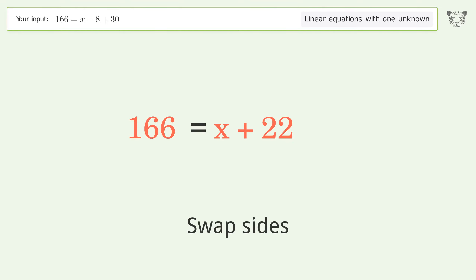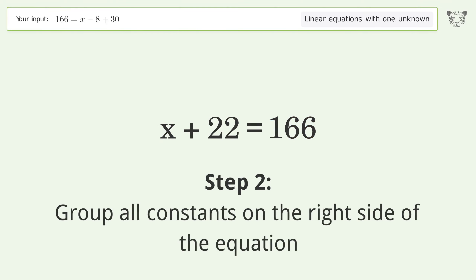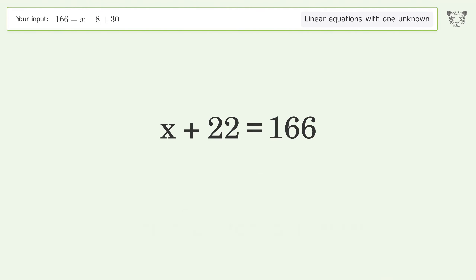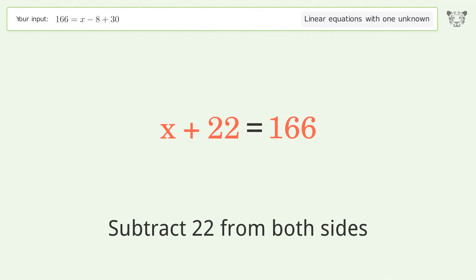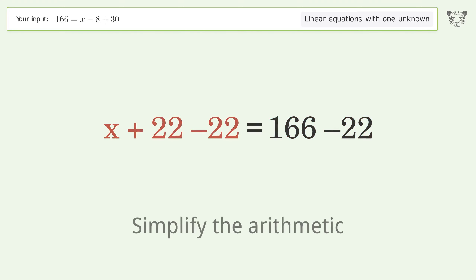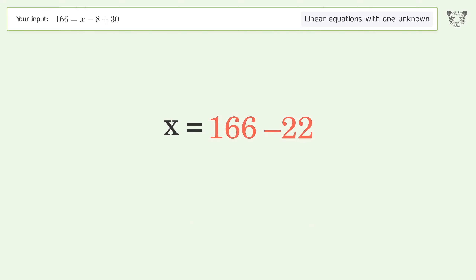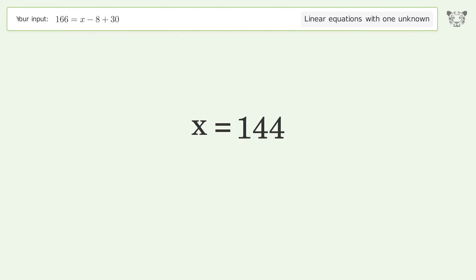Swap sides. Group all constants on the right side of the equation and subtract 22 from both sides. Simplify the arithmetic. The final result is x equals 144.